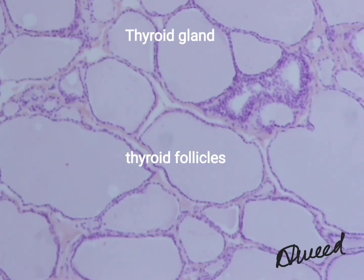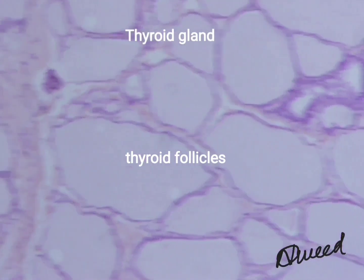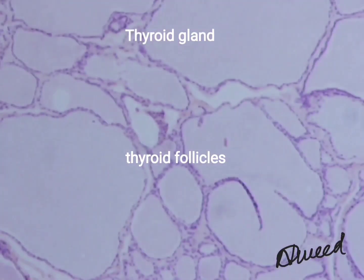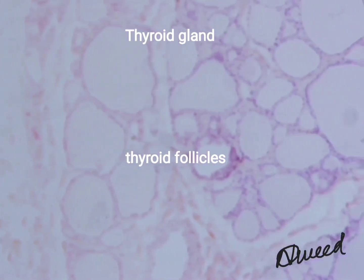Follicular cell shape depends upon the state of functional activity of the gland. In inactive follicles, follicle cells are low cuboidal or maybe squamous. Their microvilli are less prominent, colloid is larger in amount, and colloid stains lightly acidophilic.